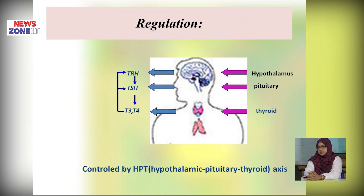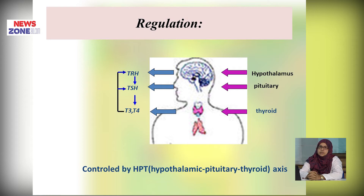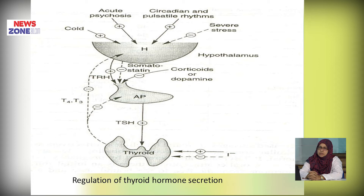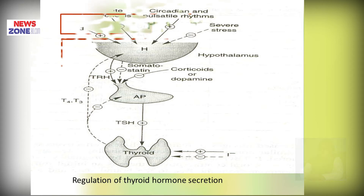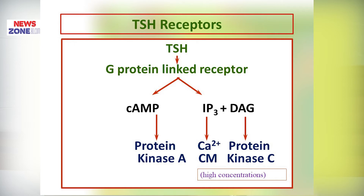The regulation of thyroid hormone synthesis is mainly a negative feedback mechanism. First, thyroid releasing hormone is synthesized from the hypothalamus, which stimulates the anterior pituitary to secrete thyroid stimulating hormone. This TSH acts on the thyroid gland to produce thyroid hormone T3 and T4. When T3 and T4 levels increase in blood, they send negative feedback to the anterior pituitary and hypothalamus, decreasing releasing hormone and TSH, thereby decreasing thyroid hormone production. TSH is a protein hormone that acts on receptors of thyroid follicles via secondary messengers like cyclic AMP, IP3, and diacylglycerol.